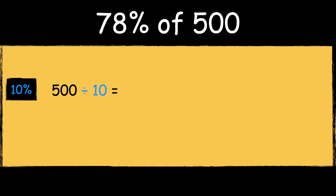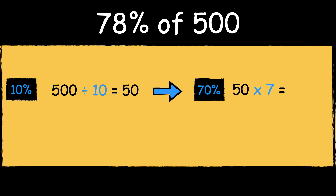Here's the next example: 78% of 500. First we find 10% by dividing the number by 10. 500 divided by 10 is 50. We then multiply the answer by 7 to find 70%. 50 times 7 is 350.